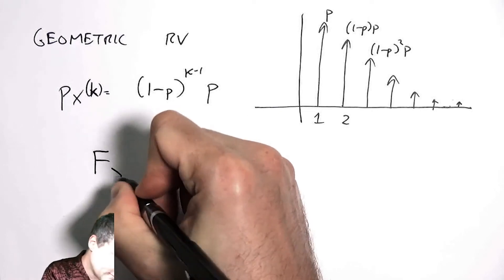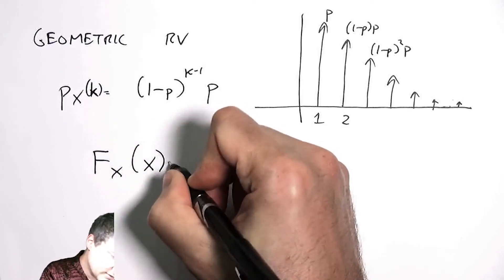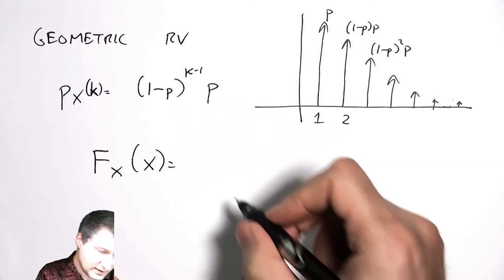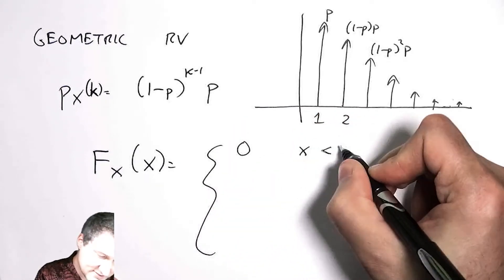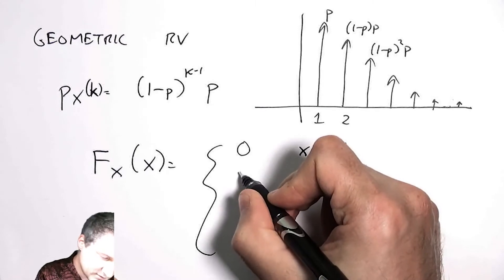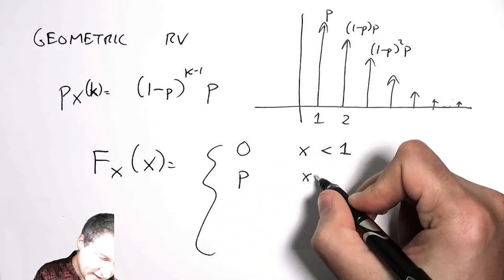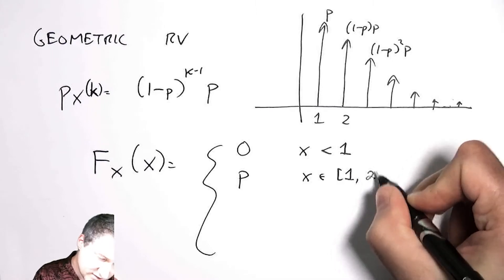And so I can see that the CDF for a given value is going to be—well, let's do this as a case notation. So it'll be zero when x is less than one, it's going to be p when x is in the interval one to two, it's going to be p plus (1-p) times p when x is in the next interval, and so on.